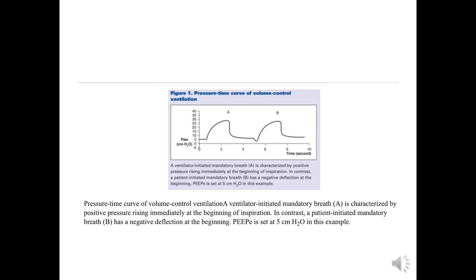Here you can see the pressure-time scalar of a volume control ventilation where pressure is plotted against time. The first breath labeled A is a ventilator-initiated mandatory breath, showing positive pressure rising immediately at the beginning. Breath B is a patient-triggered mandatory breath, depicted with a negative deflection at the beginning. The baseline pressure starts from 5, meaning the set PEEP is 5. From that point the pressure increases through inspiration, reaches a maximum, then decreases.